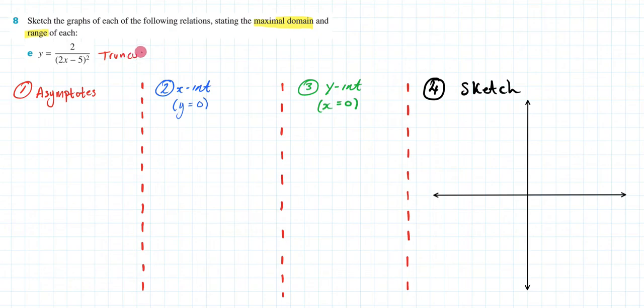So we should be able to recognize the general shape of the graph by just looking at it. I've broken this down into 4 steps. We're first going to find the asymptotes, then the x-intercept, then the y-intercept, and then we'll give it a sketch.